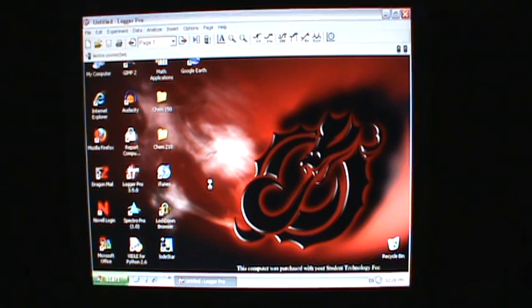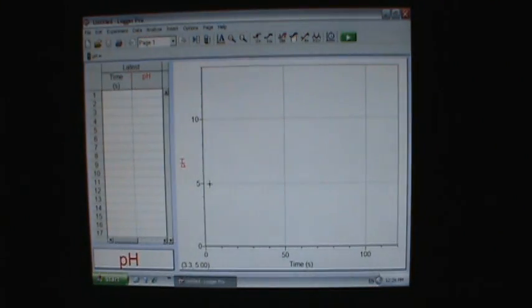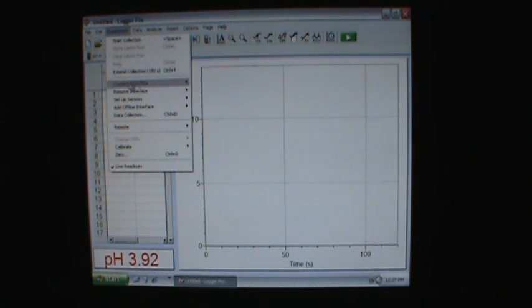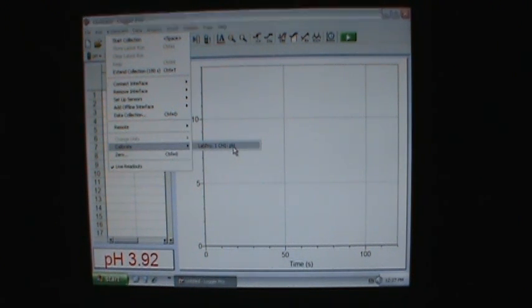And when it boots up, it should automatically detect that there's a pH meter connected or pH probe connected. So it tells us pH up in the corner and gives us a live readout of the pH down here. To calibrate, we need to go up to the experiment menu and calibrate. And there's probably only going to be one thing hooked up. So it should be the LabPro 1CH1, that's channel 1 pH meter. So let's click on that.